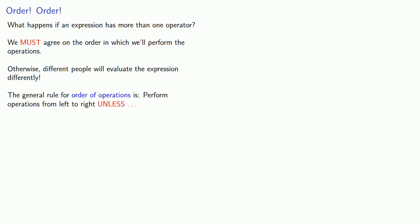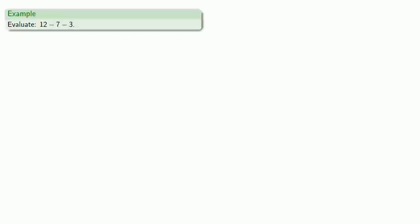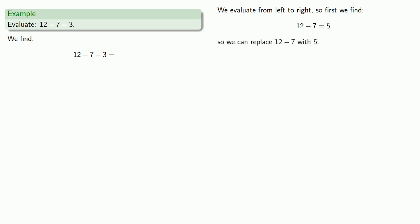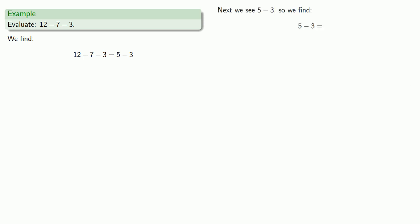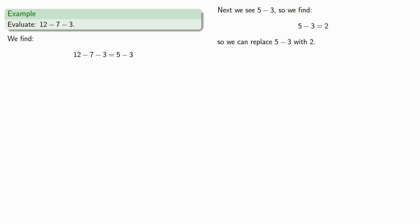The general rule for order of operations is: perform operations from left to right, unless... For example, to evaluate 12 minus 7 minus 3, we go left to right. The first thing we find is 12 minus 7, which equals 5. Equals means replaceable, so we replace 12 minus 7 with 5 — and the minus 3 is still there. Next we see 5 minus 3, which equals 2. And there's nothing left to do.